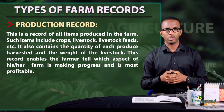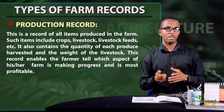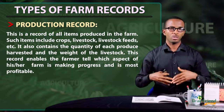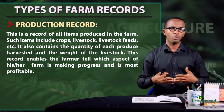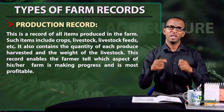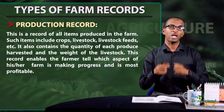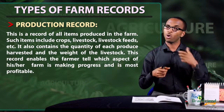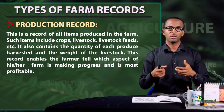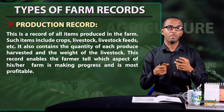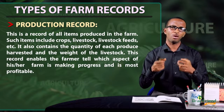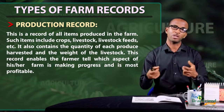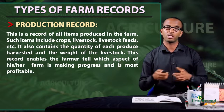Production record: this is a record of all items produced in the farm. It could be crops, livestock, livestock feed, etc. This record also contains the quantity of produce harvested in that farm and may also contain the weight of livestock. It also enables the farmer to know which aspects of his farm are making progress or which aspect is more profitable.